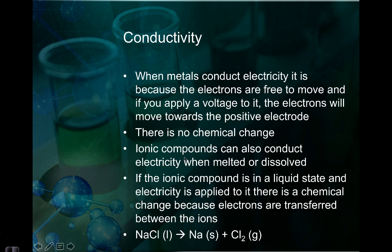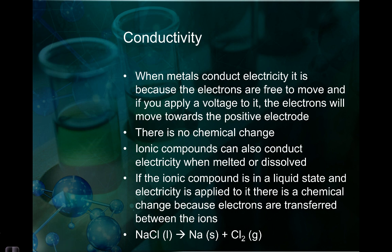Ionic compounds can also conduct electricity. So when we're looking at data and trying to decide if a compound is ionic, covalent, or metallic, we generally look at the conductivity first. Metals are always conductive no matter what. But ionic compounds can conduct electricity when melted or dissolved, because ions need to be able to move around. If an ionic compound is in a liquid state — so if I take liquid sodium chloride and apply a voltage to it — a chemical change will occur. You can actually move the electrons around, and from sodium chloride you can actually go back and create solid sodium and chlorine gas.